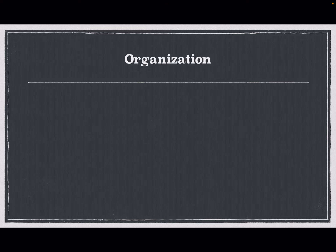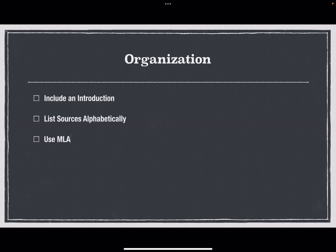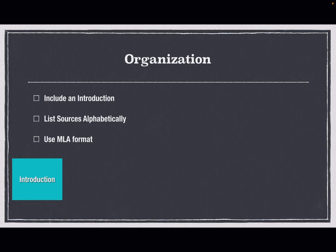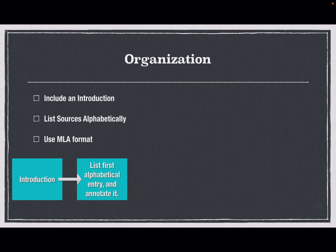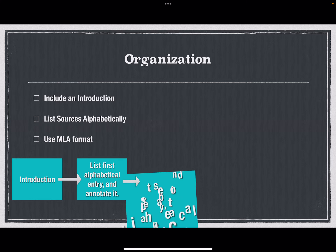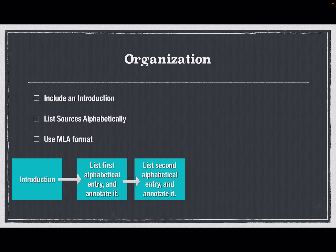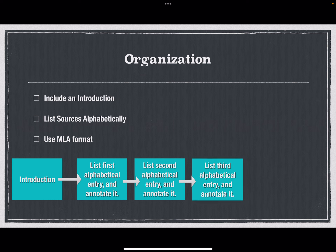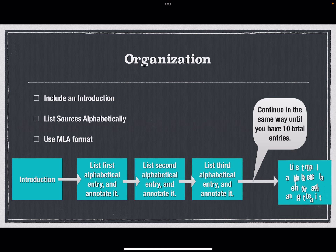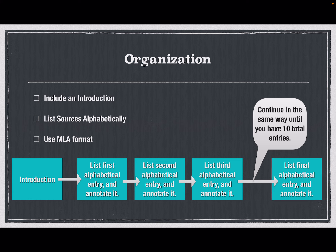For the organization of your annotated bibliography, you should include an introduction. List the sources alphabetically and use MLA style citation. Start with your introduction, then follow that with the first entry listed alphabetically, and that entry should be followed by its annotation directly. Then list the second alphabetical entry and annotate it, then the third, and continue in the same way until you have 10 total entries. Please look at the student examples to see how this organization looks.